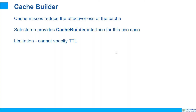Cache Builder: earlier I talked about cache misses. In order to follow best practices, we have to handle cache misses in our Apex code and check at what time cache misses happen. Salesforce has provided cache builder, which handles cache misses automatically — we just have to implement this interface. The limitation of cache builder is that we cannot specify the time-to-live for caching. If using org cache, the default storage time is 24 hours, and for session cache it is up to 8 hours.